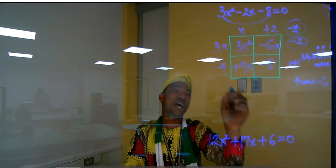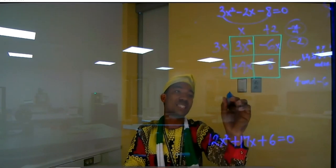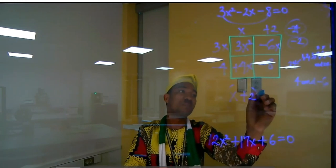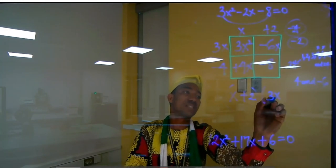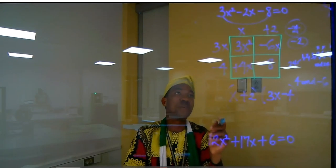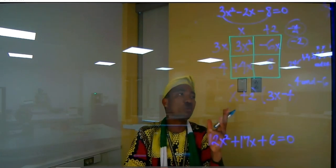So let me pick all the numbers up now. That is x plus 2. And the second one will give me 3x minus 4. So I've been able to factorize this within one minute.